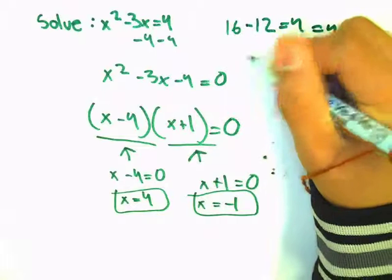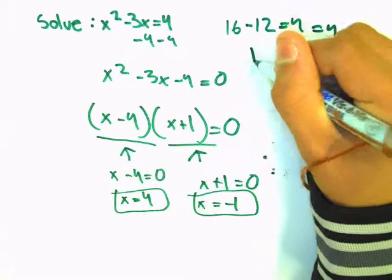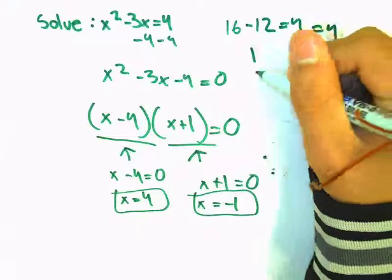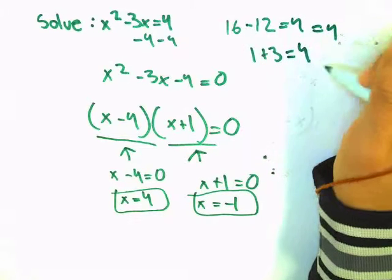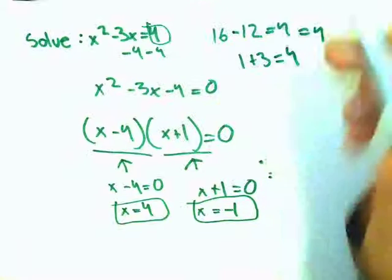And negative 1 times negative 1 is 1, and plus 3 equals to 4. And since it equals to 4, that means the equation is right.